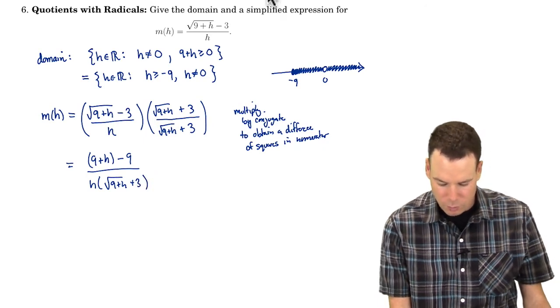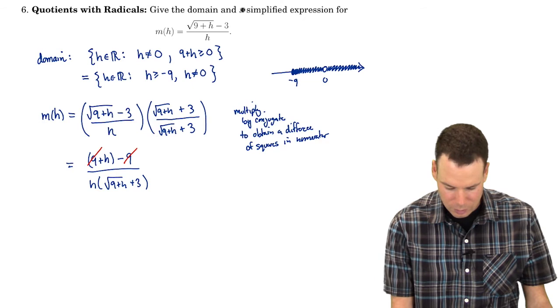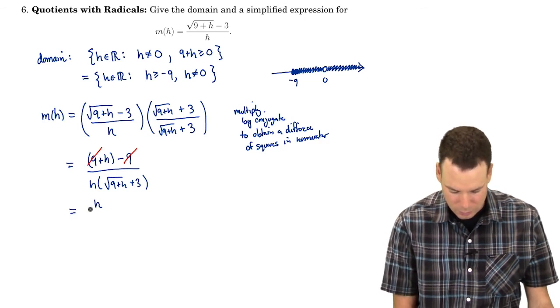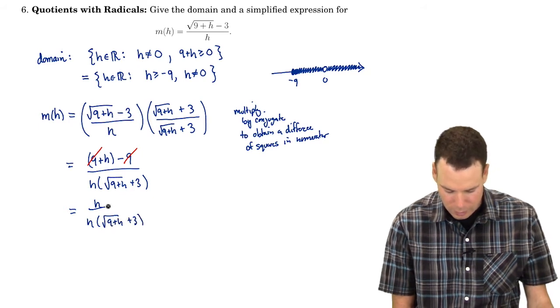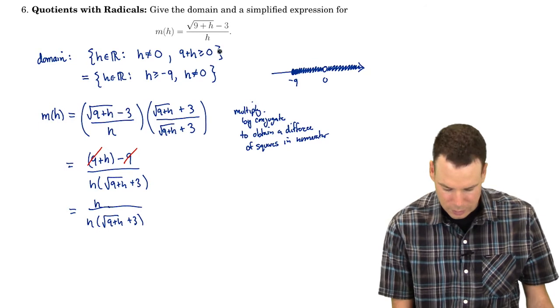And that's the wonderful part because now those nines cancel and I got h to reveal itself in the numerator. Now that it's revealed itself I can cancel it off.